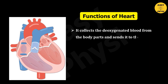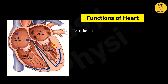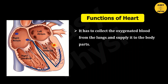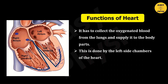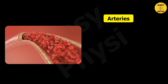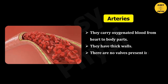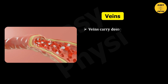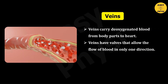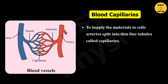The functions of the heart are: It collects deoxygenated blood from the body parts and sends it to the lungs — this is done by the right side chambers. It also collects oxygenated blood from the lungs and supplies it to the body parts — this is done by the left side chambers. Blood vessels have three types: Arteries, which carry oxygenated blood from the heart to body parts and have thick walls with no valves; Veins, which carry deoxygenated blood from body parts to the heart and have valves allowing blood flow in one direction with low blood pressure; and Capillaries, which are thin fine tubules that arteries split into to supply material to cells, and which join together to form veins.